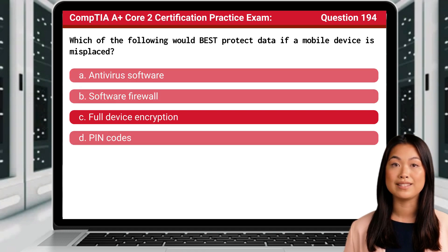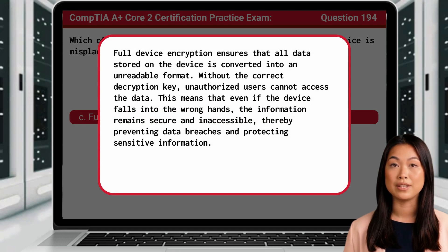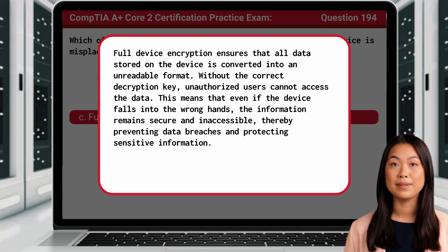The answer is C: Full device encryption. Full device encryption ensures that all data stored on the device is converted into an unreadable format. Without the correct decryption key, unauthorized users cannot access the data. This means that even if the device falls into the wrong hands, the information remains secure and inaccessible, thereby preventing data breaches and protecting sensitive information.